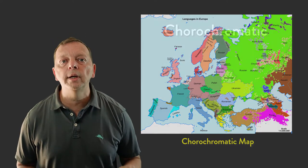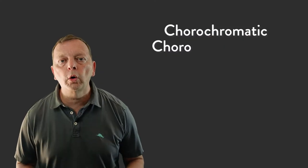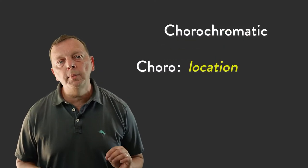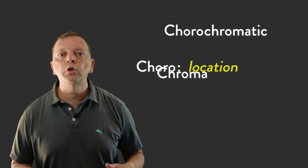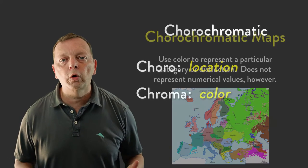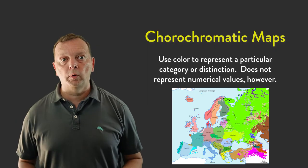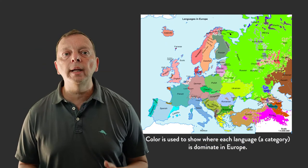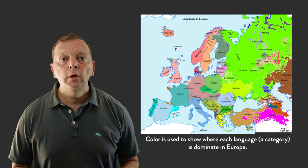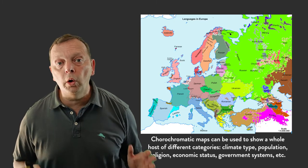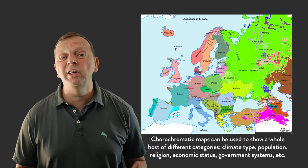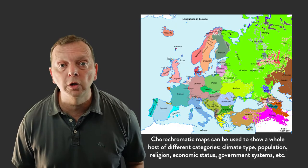This type of map is known as a chorochromatic map. Choral means location, and chromatic comes from the Greek word chroma, which means color. A chorochromatic map uses color to show categories or descriptors of a region. So in this case, each color represents the language that is most spoken in the region. Chorochromatic maps can show a whole host of different categories, such as religions, languages, government types, and much, much more.